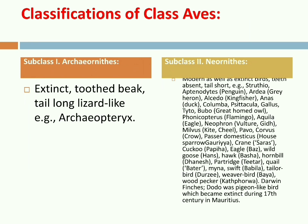Birds maintain body temperature of nearly 110 to 113 degrees Fahrenheit with high metabolic activity, and they are omnivorous in nature — meaning they can digest any type of food, both plant and flesh. Birds belong to class Aves of the phylum Chordata. The class Aves is divided into two subclasses: Archaeornithes and Neornithes.